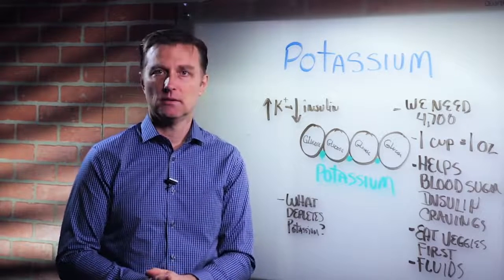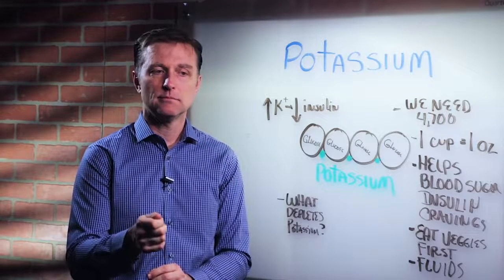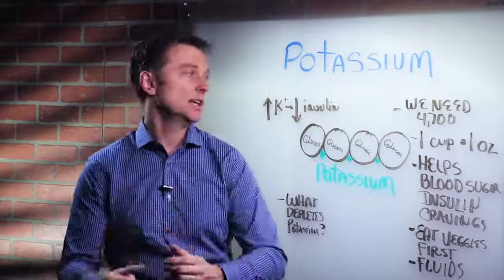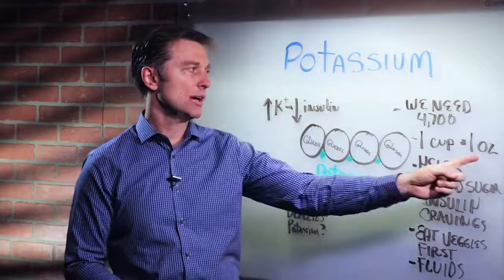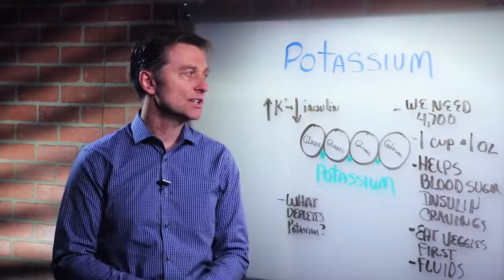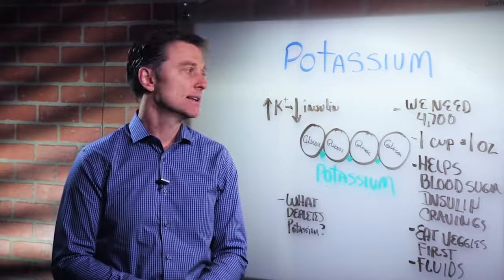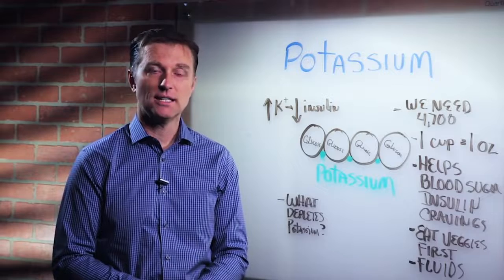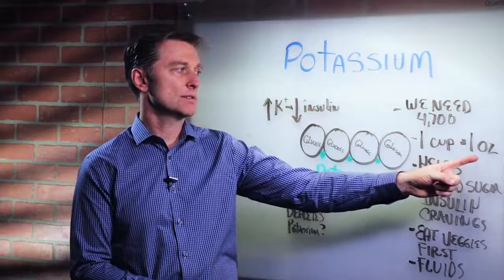So how do we know we're getting enough potassium? Well, one cup of greens, vegetables, or salads, on average, equal one ounce. One cup equals one ounce. And you need 4,700, so you're going to need about seven to 10 cups, or seven to 10 ounces.